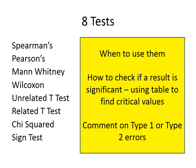The main thing to be aware of is the number of tests you have to know for the exam — there are eight statistical tests. Perhaps the most important thing is that you only have to know how to calculate the sign test. What you do need to know with all of the tests is when to use them, and how to check if the result is significant using a table of critical values. You may also be required to comment on whether a type 1 or type 2 error is more likely given the results.